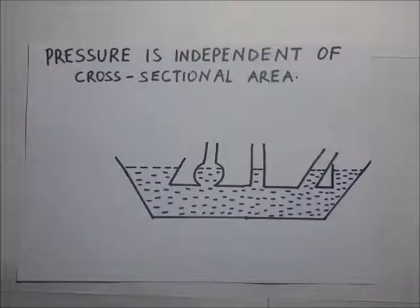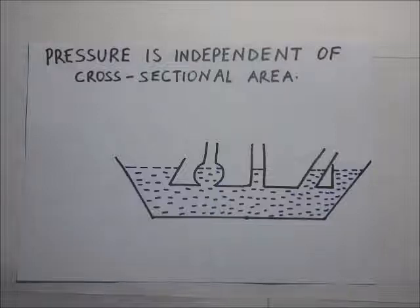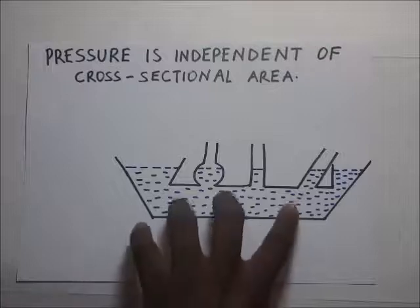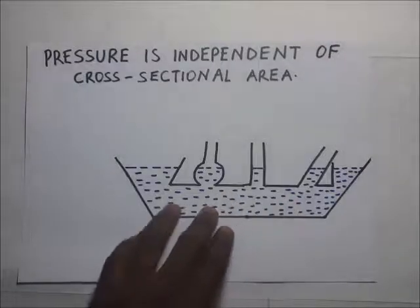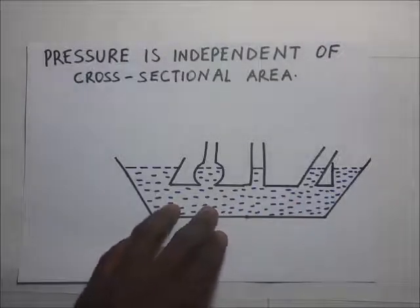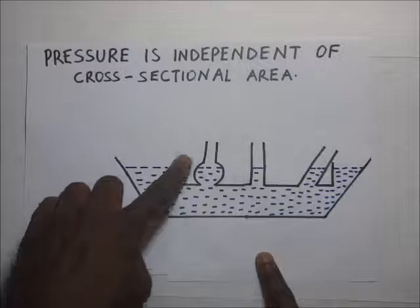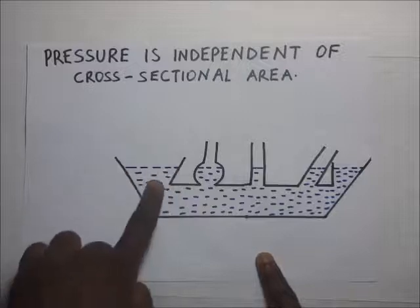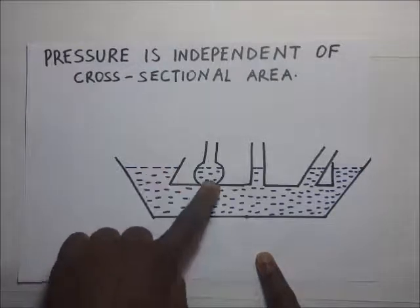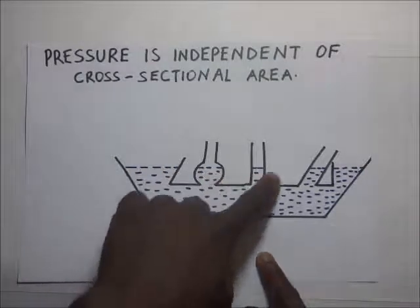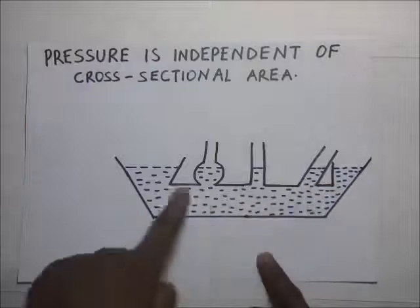To show that pressure is independent of the cross-sectional area or the shape of the container, we have a flask constructed with protrusions of different cross-sectional areas. If you look at these shapes, they are not all the same.